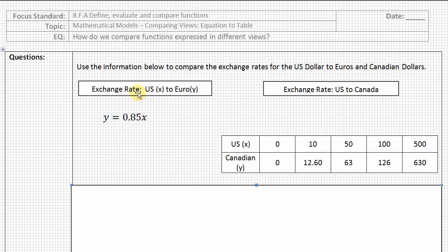I want you to look at the information below to compare the exchange rates for the U.S. dollar to Euros, as well as from the U.S. dollar to Canadian dollars. Over here on the left, I have the exchange rate for U.S. dollars to Euros expressed as an equation, which would be y equals 0.85x, where U.S. is represented by the x variable, and Euros is represented by the y variable. In our table, I have the exchange rate for U.S. dollars to Canadian dollars. Take a little bit of time to see what kind of information you can decipher.